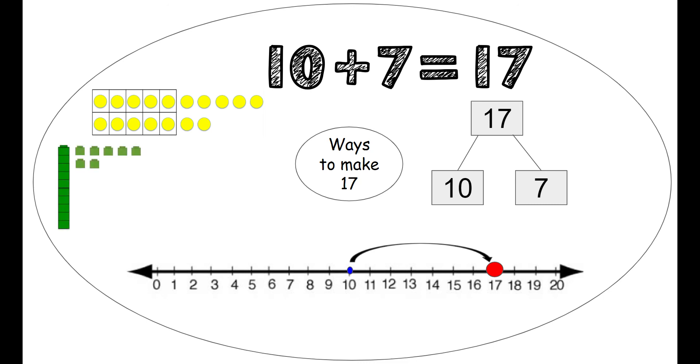We can use our unifix cubes. We have one group of 10. We have one stick of 10 all together. And then 7 ones by themselves. And we can also use our rekenrek. So we see 10. We slide 10 beads over on the top. And then 7 beads over on the bottom. Because 10 and 7 make 17. You got it.